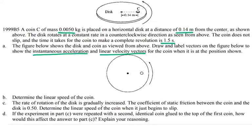For centripetal acceleration, it's always toward the center—center-seeking acceleration. So, centripetal acceleration. And the velocity is perpendicular to it. Determine the linear speed of the coin. So for part B, I need to determine the linear speed of the coin.